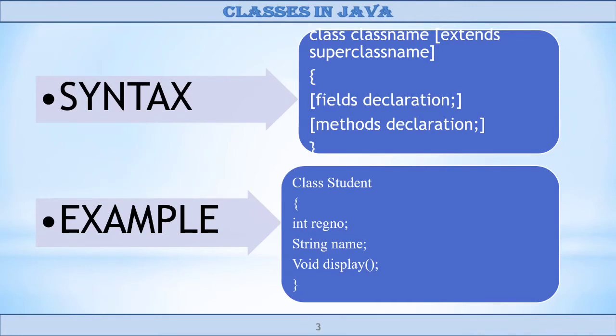Let's see one example. Here class name is student. This class has an integer variable, register number and string variable, name and one method called display. Instance variables are also known as member variables.